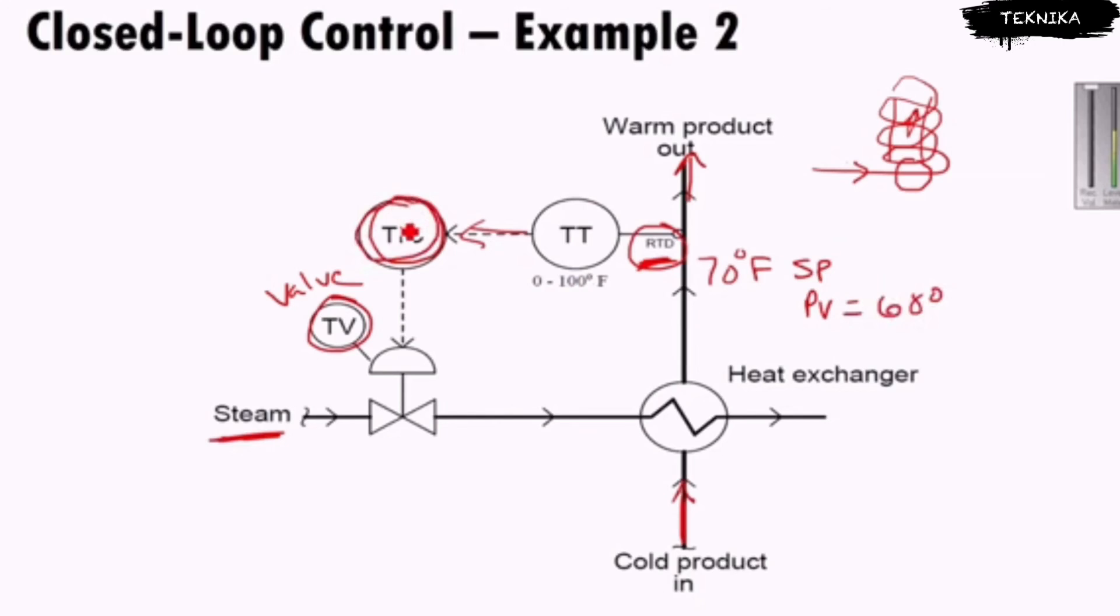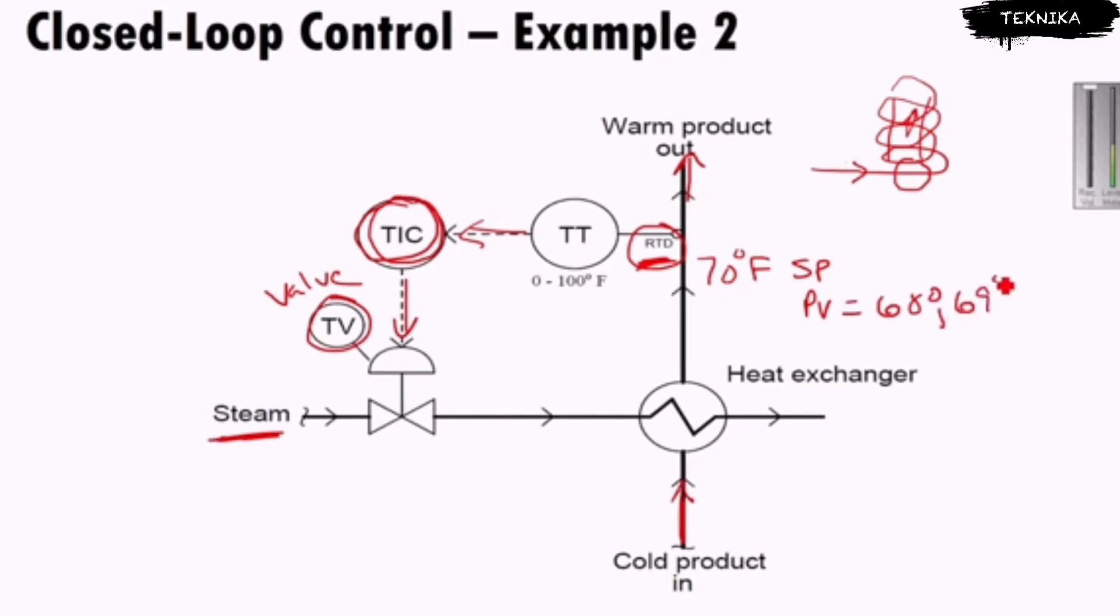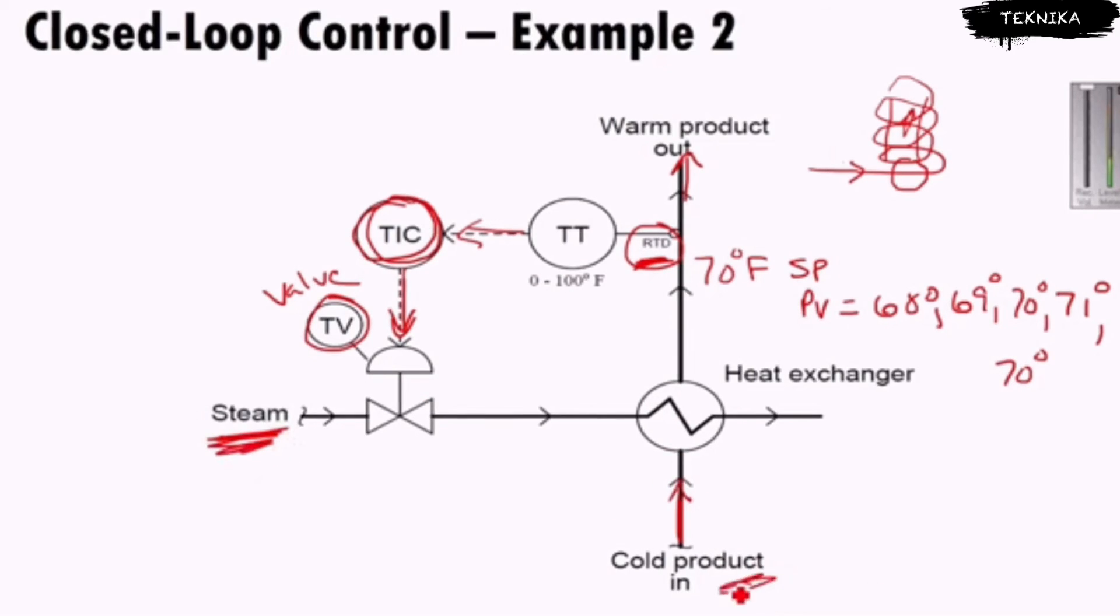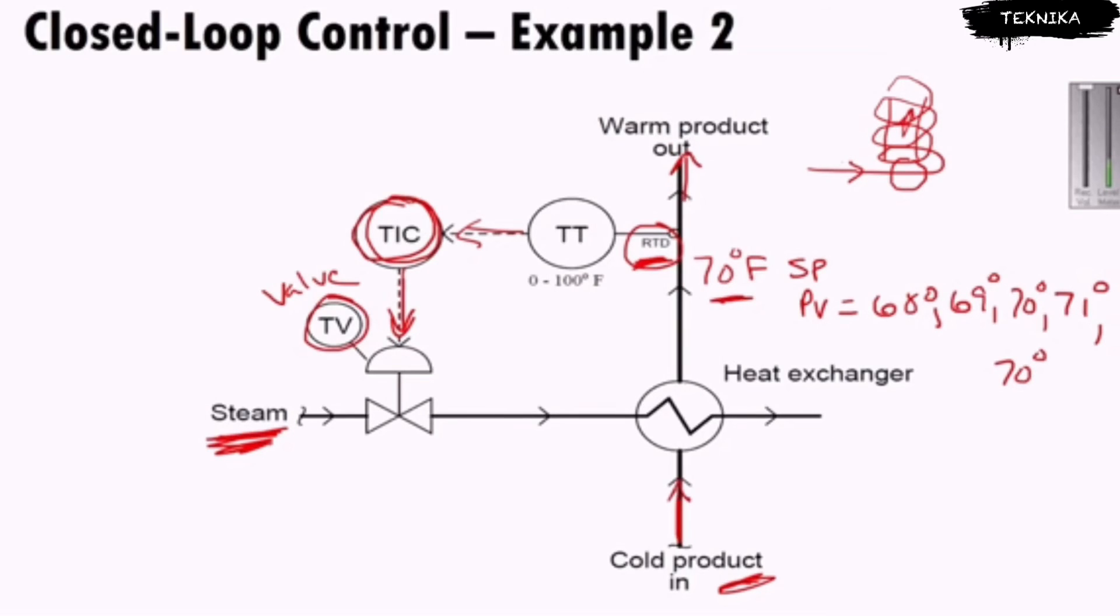The controller is going to say you're two degrees too low, I want to open up this valve a little bit more and get more steam. Maybe 68 goes to 69, and maybe 69 goes to 70. It's possible that it might go too high - now it went to 71 degrees. Now the controller is going to say I'm a little too warm, I want you to shut that valve a little bit. Now I go down to 70 degrees and the heat exchanger is just right for the product. The steam temperature could change a little bit, the product coming in could be a little colder or warmer, but I'm trying to maintain this temperature. I've got lots of different pieces that fit into this closed loop control system.